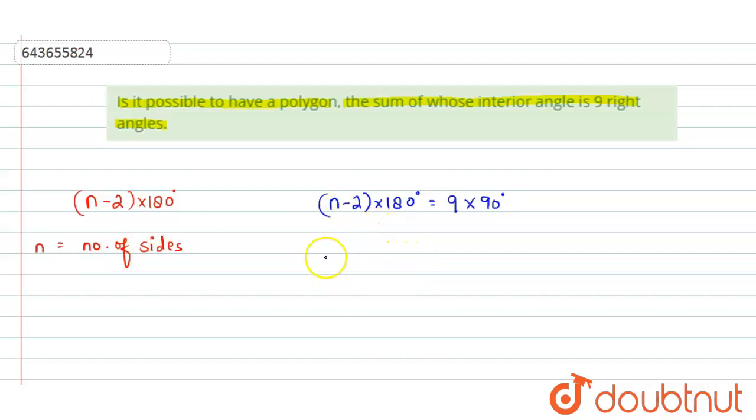So let us try to solve this equation. So this will give us, first of all, you can cancel this 180° by this 90°, and it will be 2 here. And this will be (n - 2) × 2 = 9.